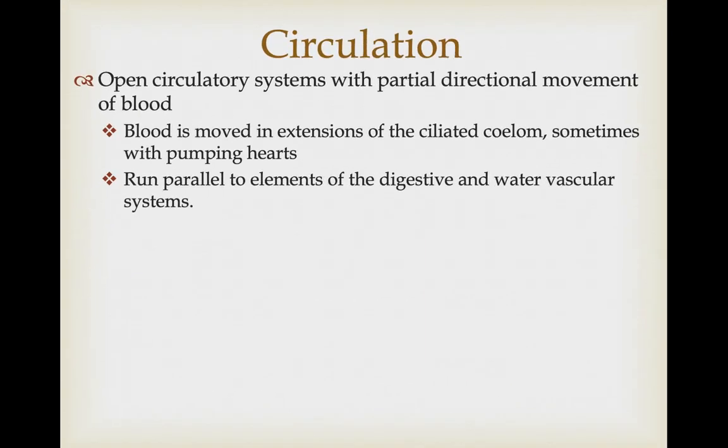The circulatory system is relatively simple, which shouldn't be surprising given that they're not very quickly active. They have an open circulatory system with partial directional movement of blood. Blood basically moves through extensions of the coelom, which is ciliated, and the cilia is what moves much of the fluid. Sometimes they have pumping hearts but not always, and the ciliated coelom runs parallel to all elements of the digestive and water vascular systems leading into each arm.